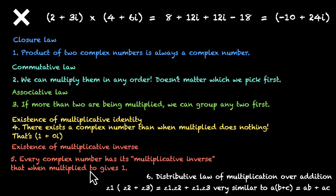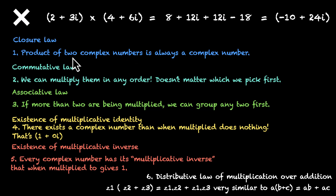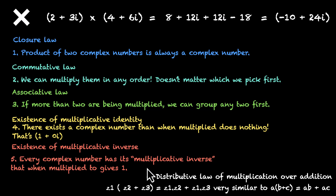For division, not many laws work. Even the closure law fails because the complex number 0+0i cannot be used as a denominator — everything breaks. So the closure law does not work for division. This is an overview of the algebra of complex numbers. Before we wrap up, let's practice finding the multiplicative inverse, as it usually appears in problems.